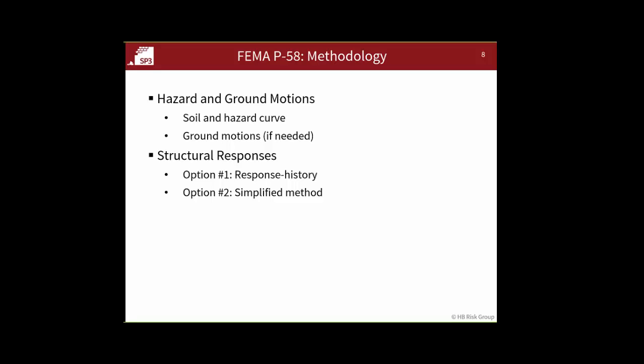For structural responses we have two primary options: do a response history analysis or run the P58 simplified method. Overall, in the near future we're hoping to make the simplified method applicable to most buildings. Right now it applies up to 15 stories and for regular buildings, which we'll talk about a bit more later.